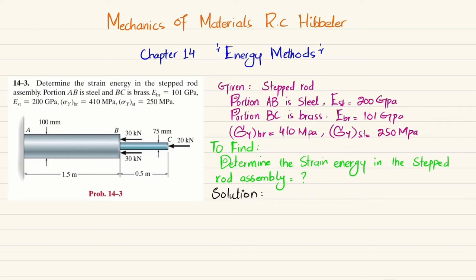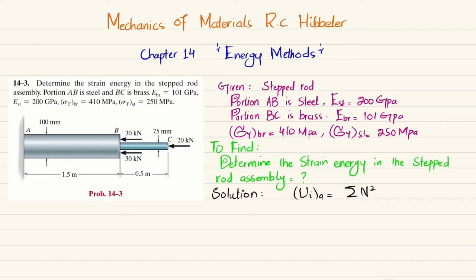Since all loads are axial and this is a step rod with two segments, the strain energy for axial loading is represented as U, and is equal to the sum of N squared times L divided by two times A times E, where N is the axial force, L is the length, A is the cross-sectional area, and E is the modulus of elasticity.